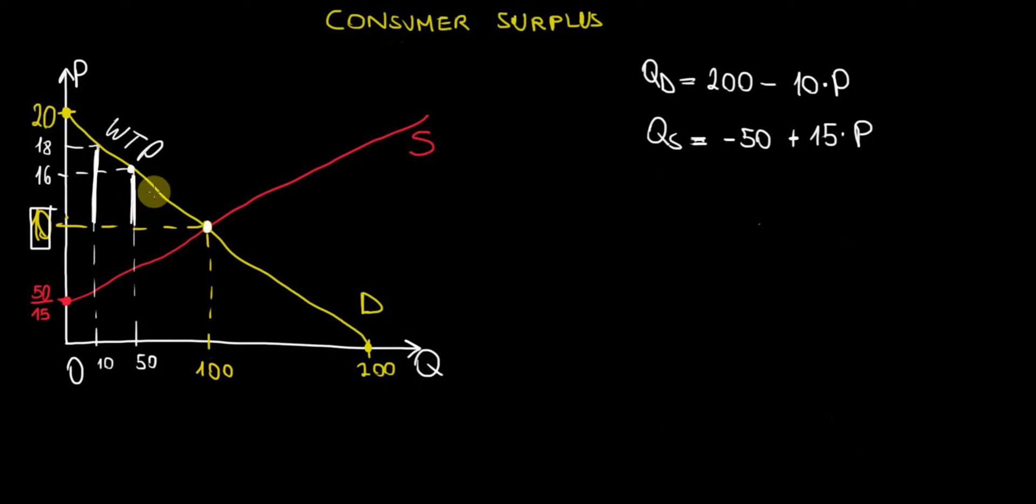Graphically, if I keep doing these things, I will draw so many lines that I will end up shading the entire triangle, which is the area between the demand curve, which shows the willingness to pay of consumers, and the equilibrium market price in our case of $10 per unit. So I hope intuitively you understood this and I hope graphically it makes sense. With that being said, let's do the algebra behind it all.